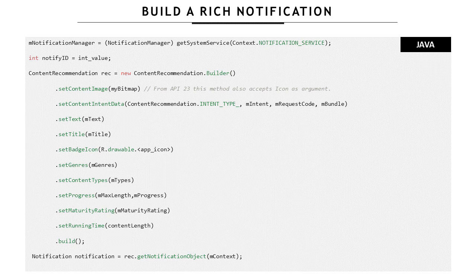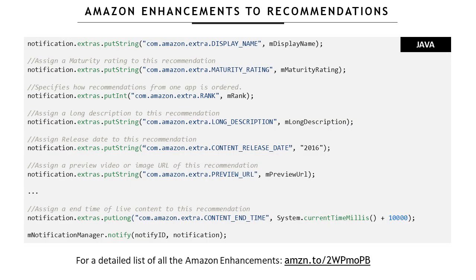We then build a new notification using the content recommendation method getNotification object. The next step is to add Amazon enhancements to the rich notification. These Amazon enhancements add additional information that the recommendation engine on Amazon Fire TV will use to build the recommendation. This includes things such as the maturity rating, a long description to be used on Fire TV, or the release date of the content.